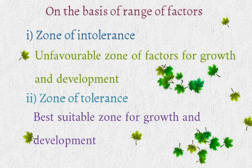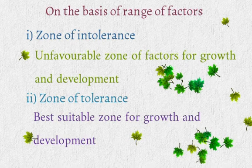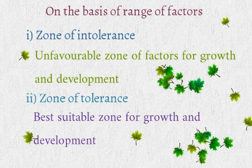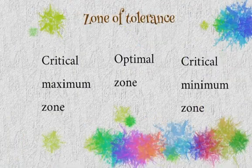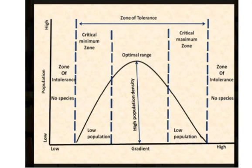On the basis of these factors, we divide the range of factors into different zones. First is the zone of intolerance — this is an unfavorable zone where factors are not present in the required or sufficient amount to carry out the biological process. Next is the zone of tolerance, which is the best suitable zone for growth and development, where factors are present in the required and sufficient amount. The zone of tolerance is further subdivided into three parts: critical maximum zone, optimal zone, and critical minimum zone.